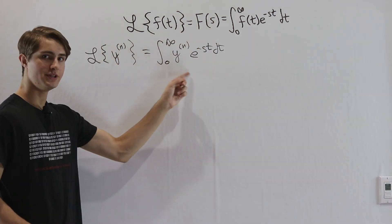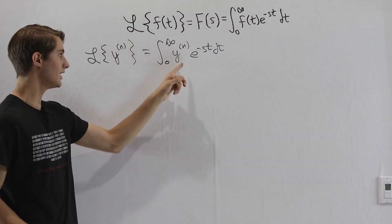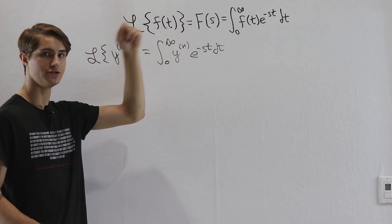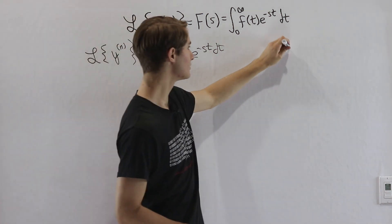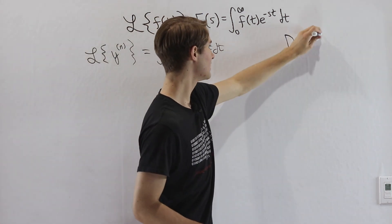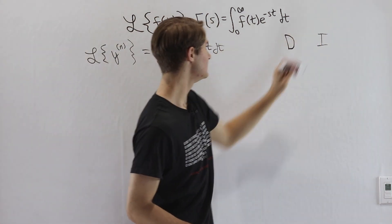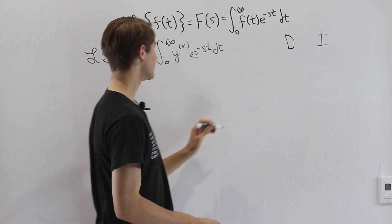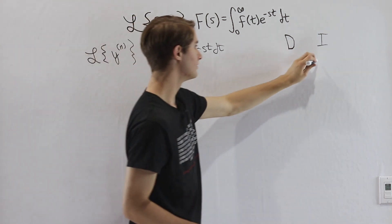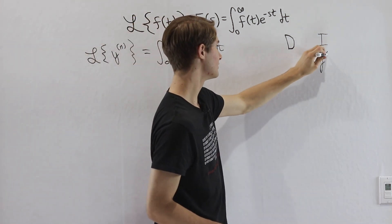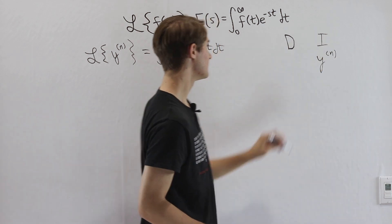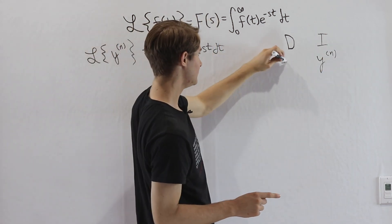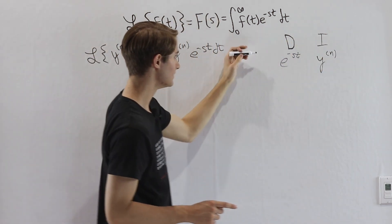To figure out what this equals, we'll need to reduce this derivative down to 0. We'll use integration by parts for that with the DI method. To start out, we know we want to integrate the nth derivative of y, and then we're going to differentiate e to the negative st.